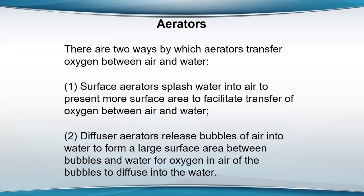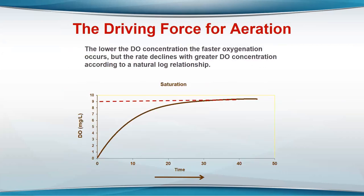The driving force of aeration is the difference in the oxygen concentration of saturation and the oxygen concentration of the water. Aeration is much more efficient at zero oxygen, but of course all your fish would need oxygen before that. You're going to have to operate somewhere around three parts per million, and the aeration is only going to be operating at maybe 50 to 60% of its efficiency compared to what's calculated in standard tests at zero dissolved oxygen.